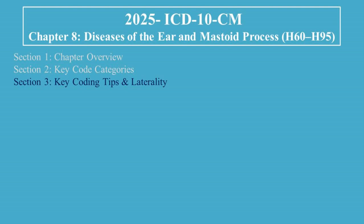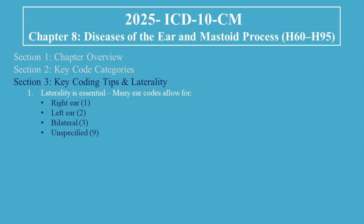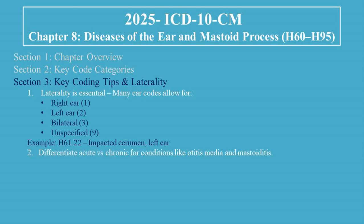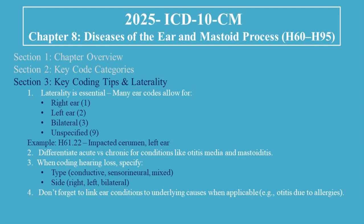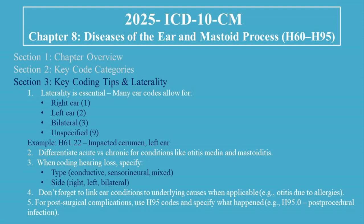Here are some important coding guidelines for Chapter 8. First, laterality is essential — many ear codes allow for right ear (1), left ear (2), bilateral (3), or unspecified (9). Example: H61.22, Impacted Cerumen, Left Ear. Second, differentiate acute vs. chronic for conditions like otitis media and mastoiditis. Third, when coding hearing loss, specify the type (conductive, sensorineural, mixed) and the side (right, left, bilateral). Fourth, link ear conditions to underlying causes when applicable — e.g., otitis due to allergies. Fifth, for post-surgical complications, use H95 codes and specify what happened — e.g., H95.0, Post-Procedural Infection.